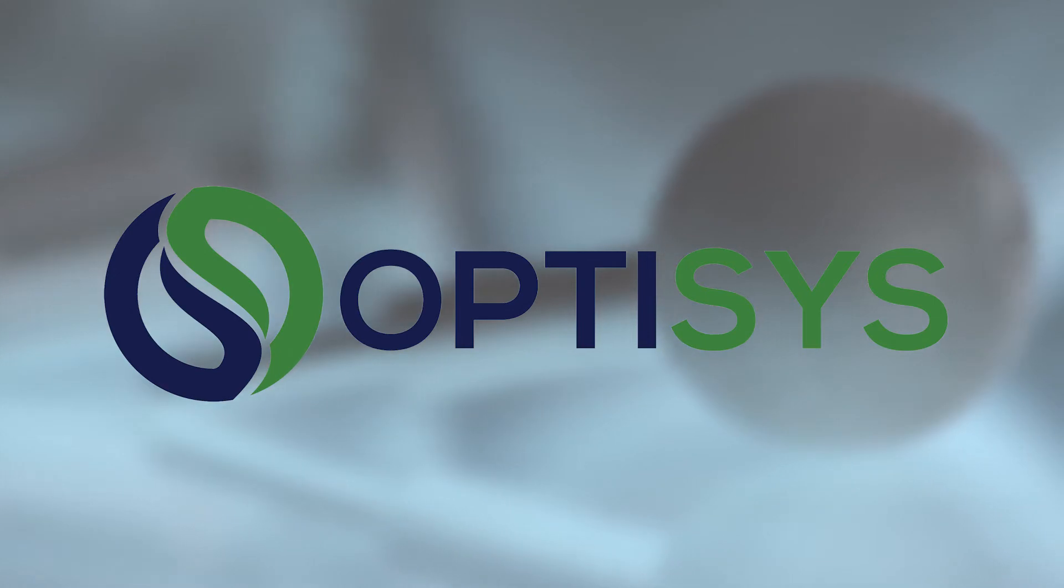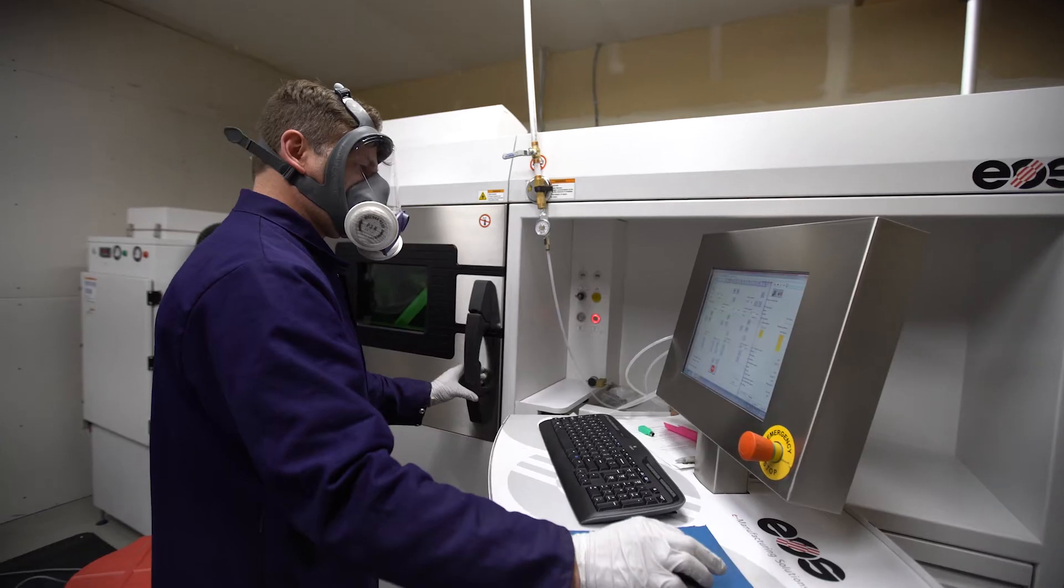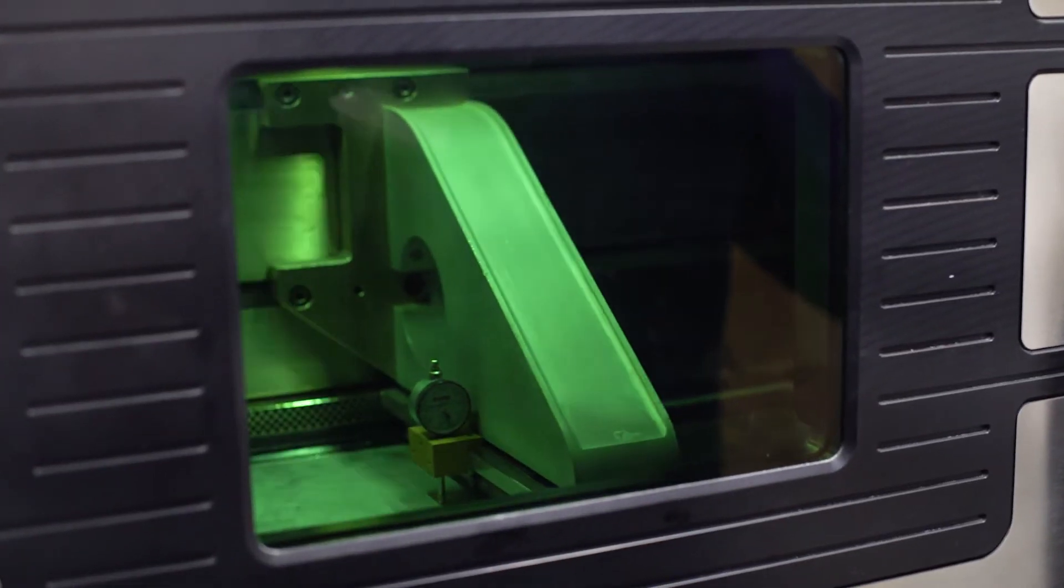Optisys was founded to design, test, and build the lightest weight microwave antennas for the military and commercial markets. We found that 3D metal printing created the smallest parts compared to manufacturing, die casting, brazing, or any of the other processes available.